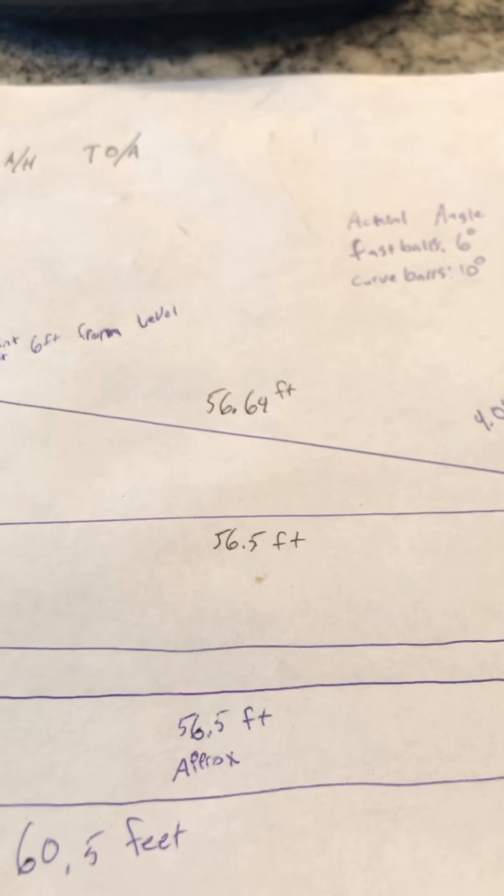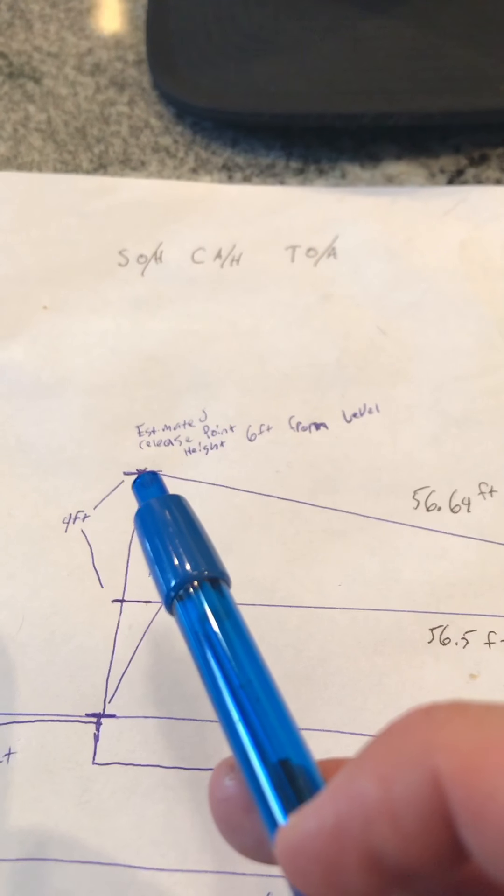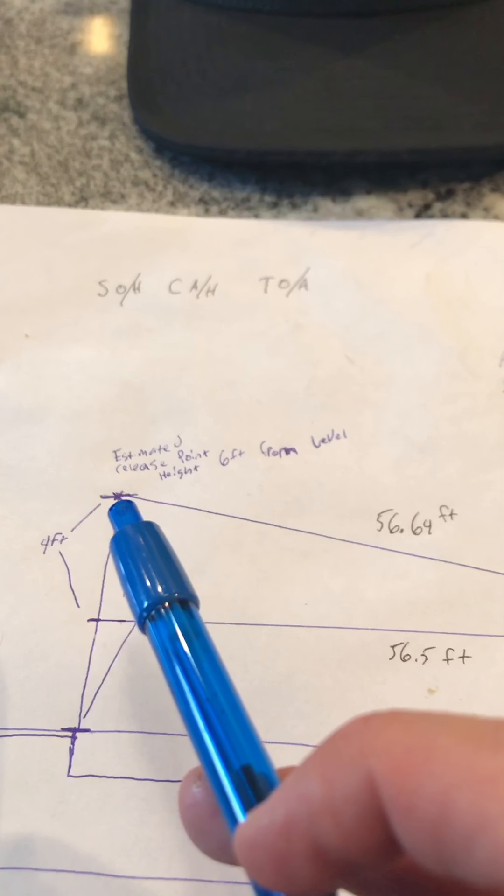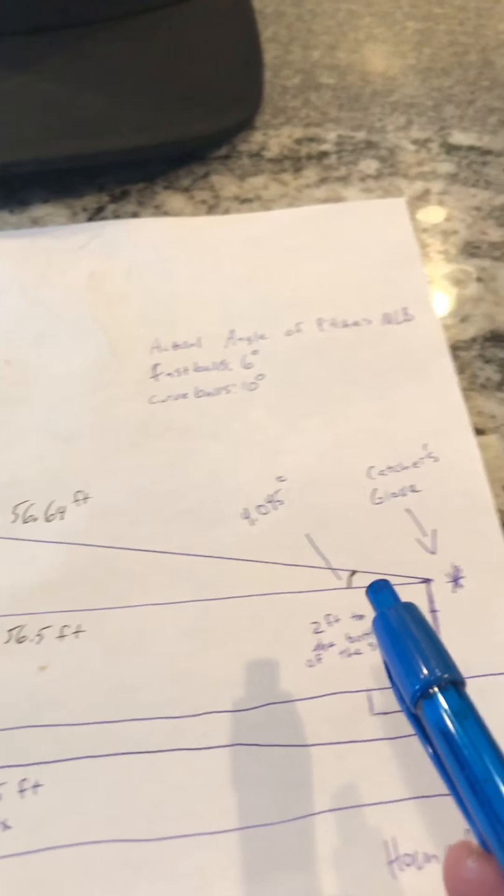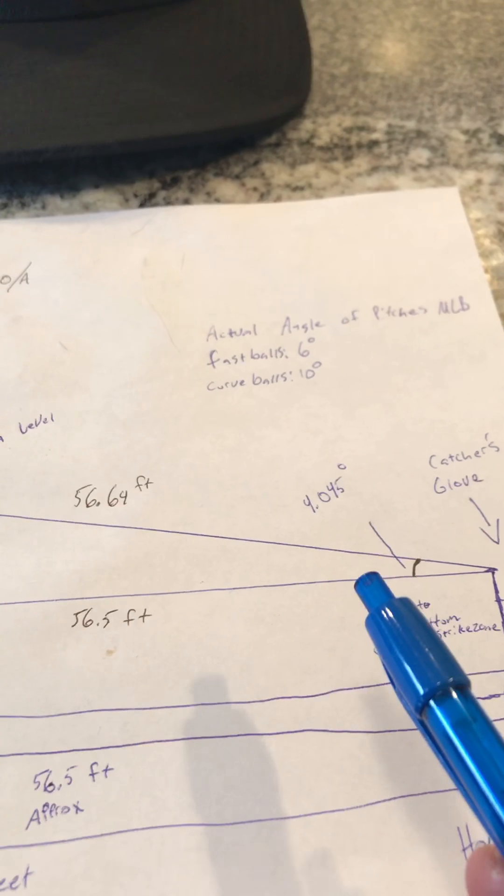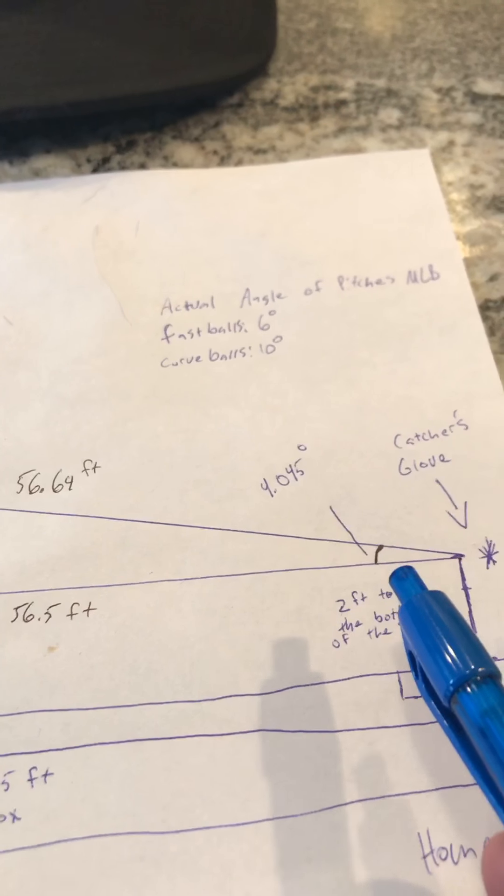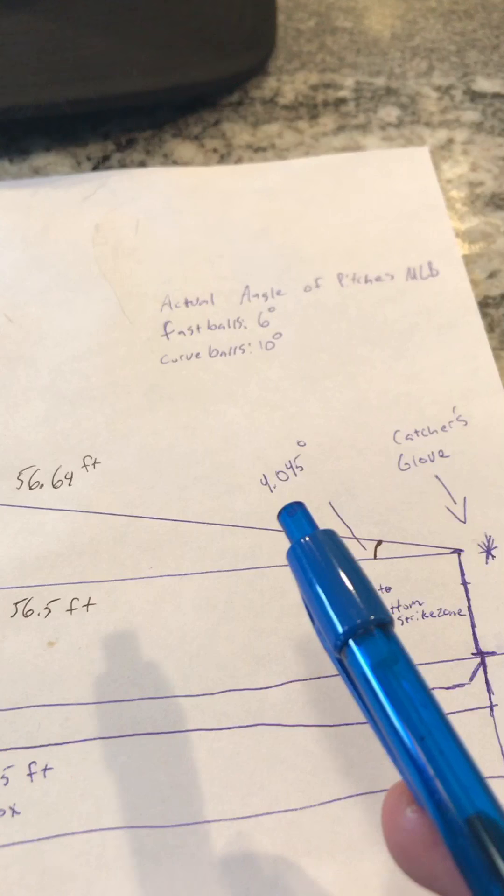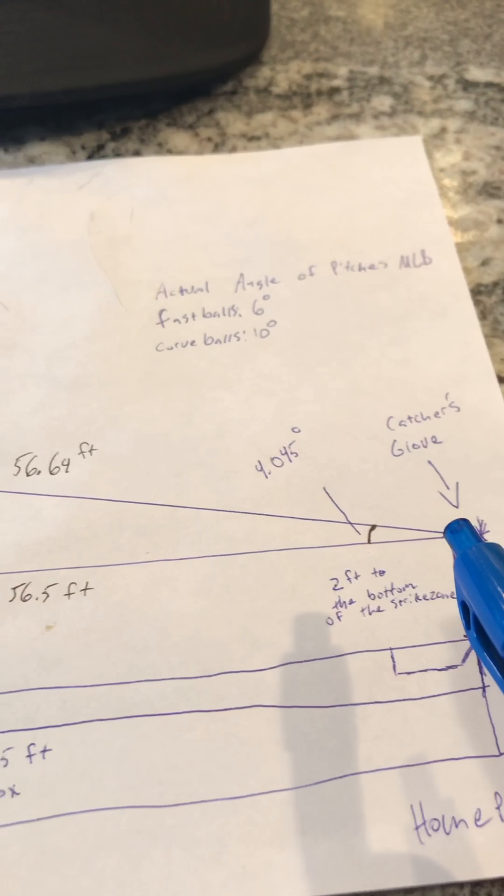You can see that the ball has to travel about 56.5 feet in the horizontal direction to end up in the catcher's glove. But the actual path of the ball, if it were going in a straight line, which we know it's not, is about 56.64 feet, which when you do the inverse tangent function, it's a little college and high school throwback right there, we're able to find that this angle right here is 4.045 degrees.